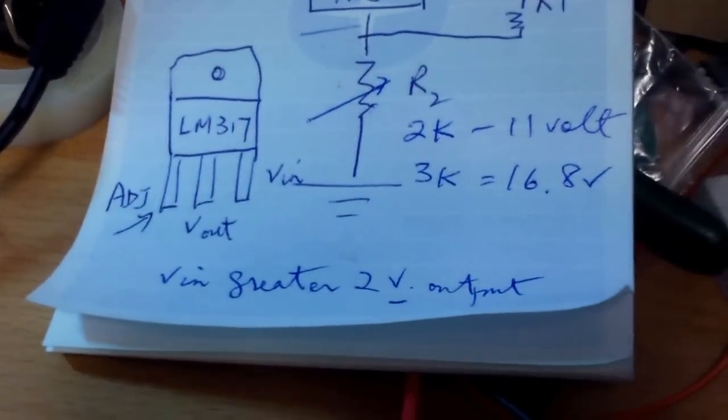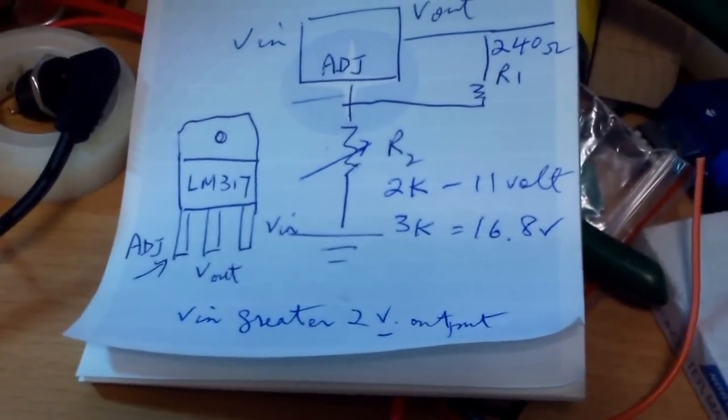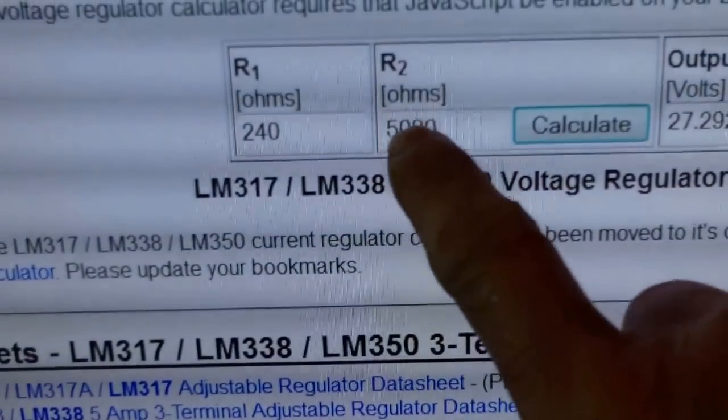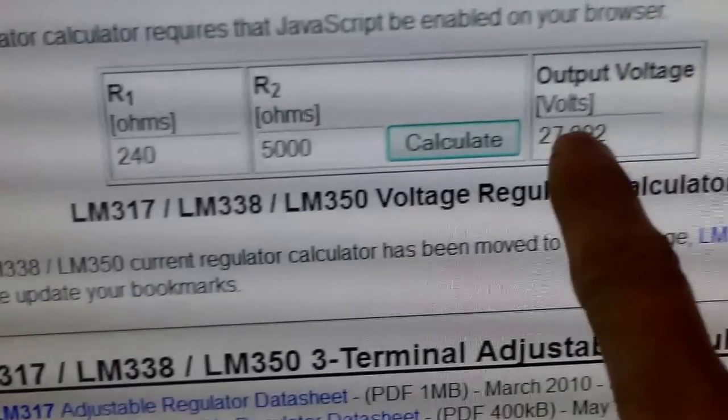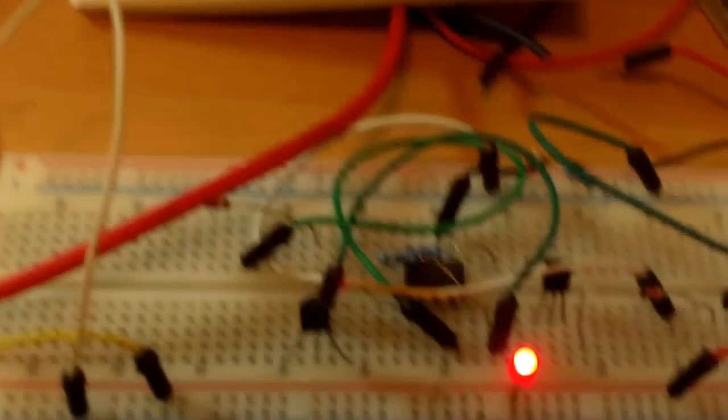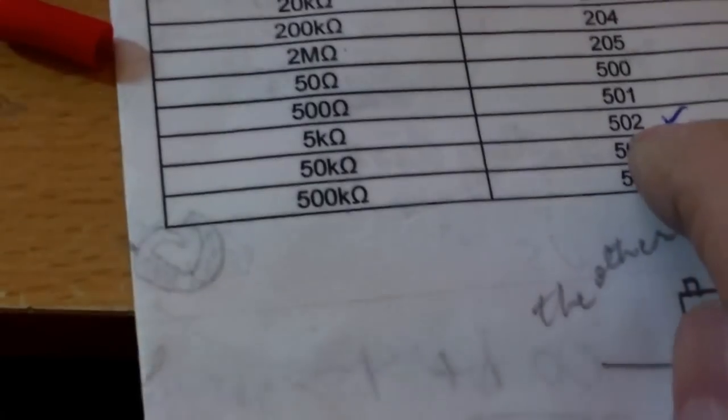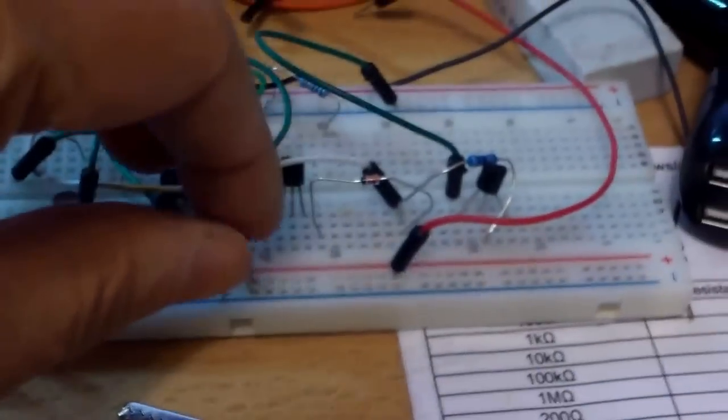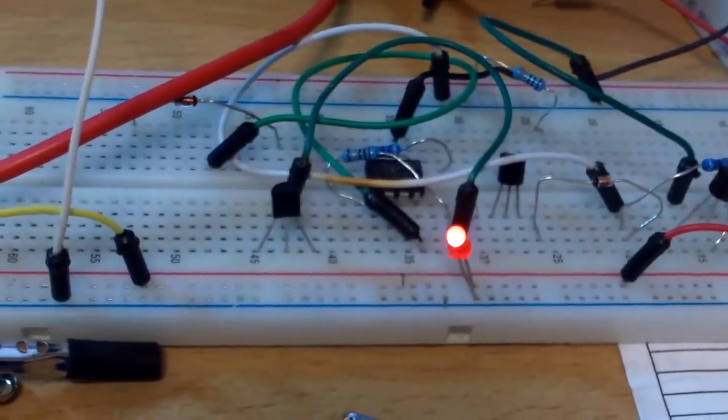If I were to use a 3k resistor, it would go up to 16.8 volts. According to the voltage calculator here for the LM317, if I were to use a 5k or 5,000 ohm resistor, the voltage can be adjusted up to 27 volts. I should have done that because I have some of these variable resistors, and it would be a 502 resistor code. But I was using the 202, so it's a 2k ohm.